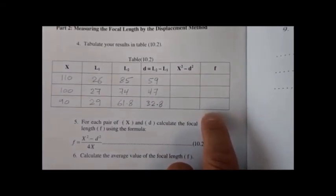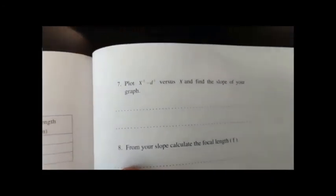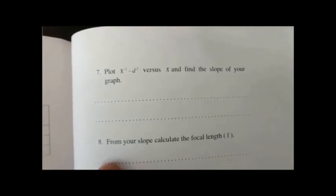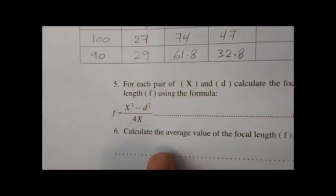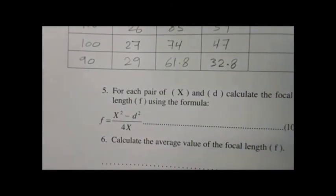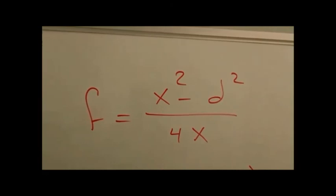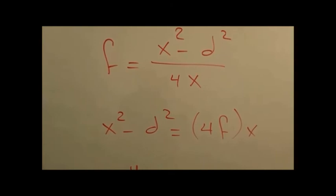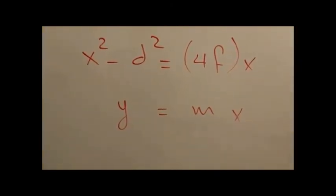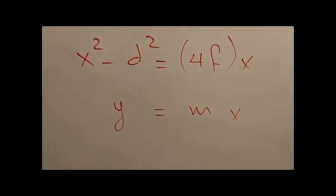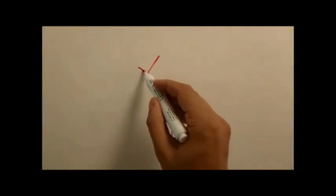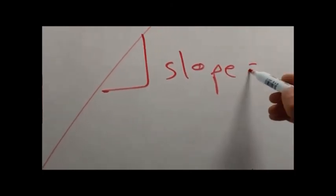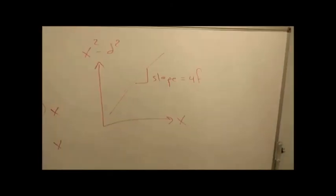You will also calculate F from a graph. Plot X squared minus D squared on the Y axis versus X on the X axis and find the slope. The equation X squared minus D squared equals 4FX resembles a straight line where the slope M equals 4F. So to calculate the focal length, divide the slope by 4.